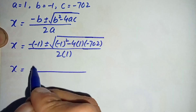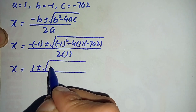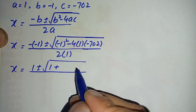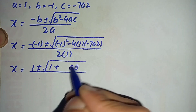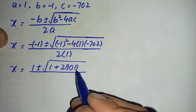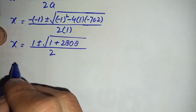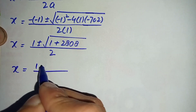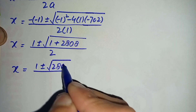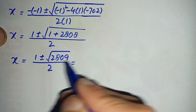Simplifying: negative times negative is positive, so we get positive 1, plus or minus square root of minus 1 squared which is 1, plus 4 times 1 times 702 which is 2808, divided by 2. The addition inside the square root gives us 2809, divided by 2.